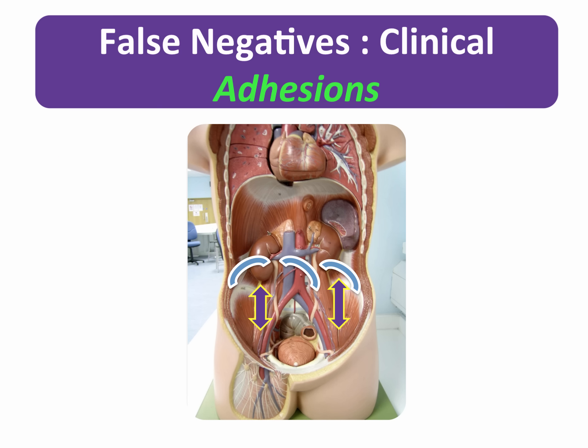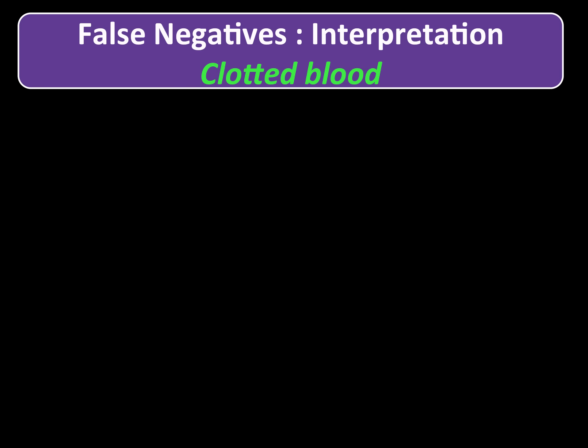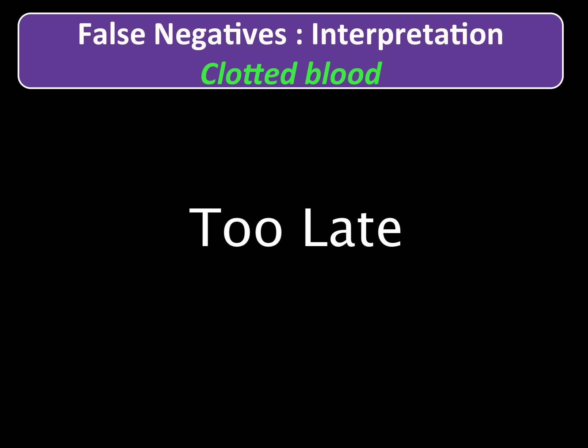Let's now turn our attention to the second category of false negatives: errors in image interpretation. Early bleeds could be missed by POCUS owing to the lack of time for fluid to accumulate. Ironically, the opposite end of the time spectrum may also lead to false negatives. As blood pools and clots after time it may no longer be anechoic as we expect, but may instead be more of an isoechoic density, and this can be easily overlooked.